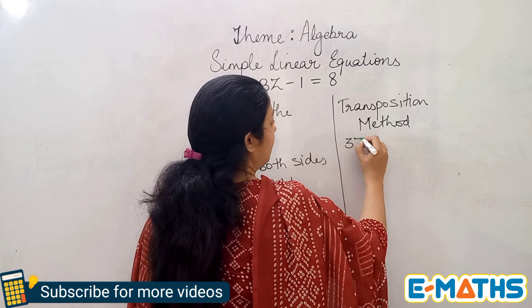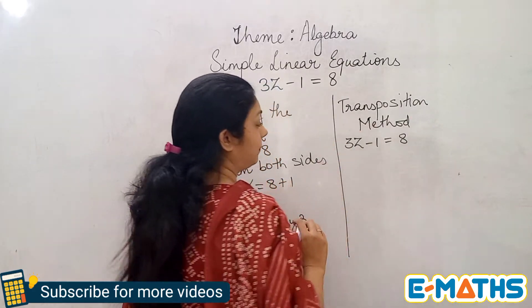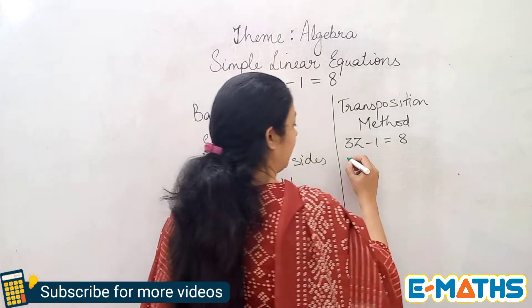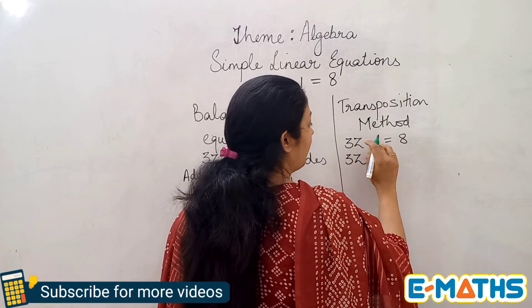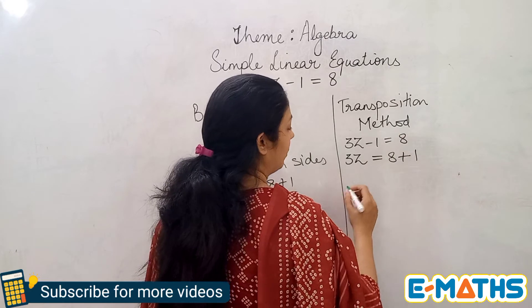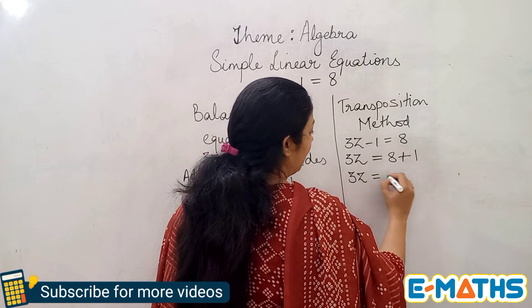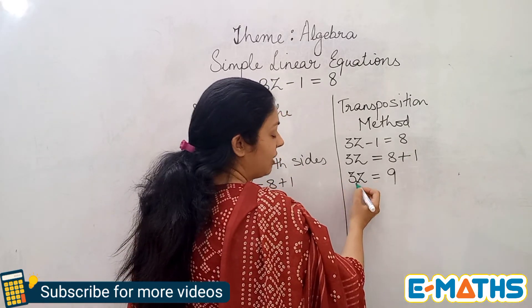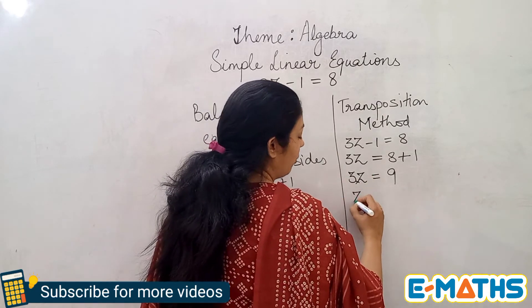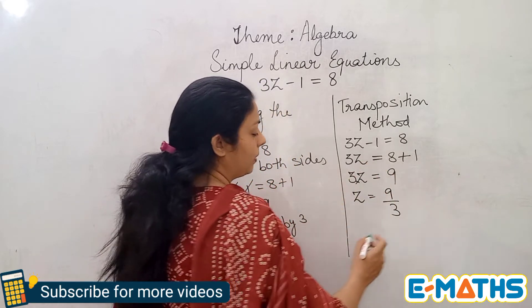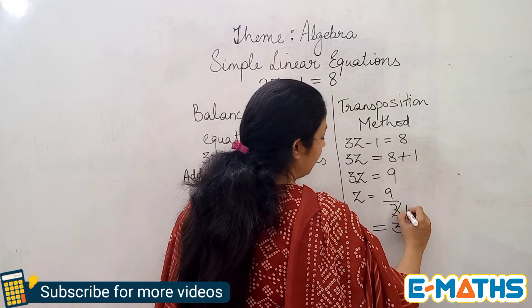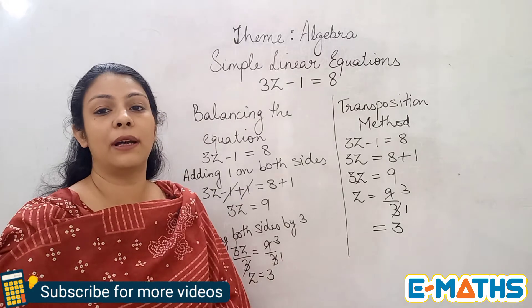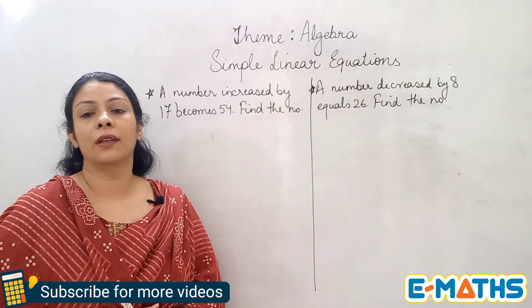Now solving 3z minus 1 equals 8 by transposition. I remove the constant first — transpose minus 1 to the right hand side, changing its sign to plus 1, giving 3z equals 9. Then I transpose the 3: since it is in multiplication, when moved to the other side it becomes division, giving z equals 9 upon 3, which equals 3. We get the same answer with both methods.